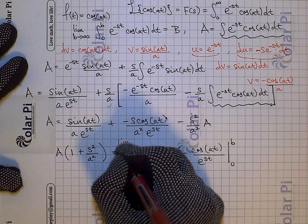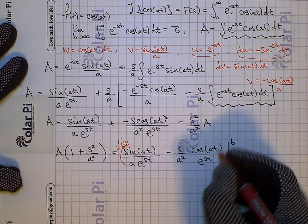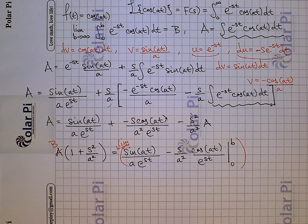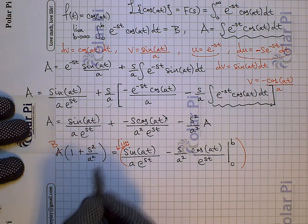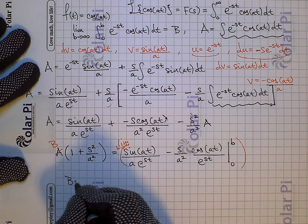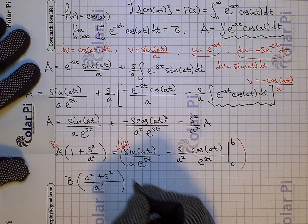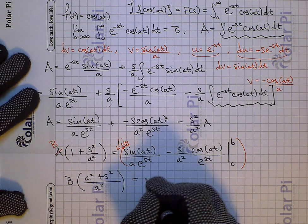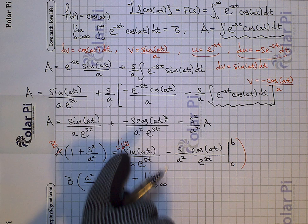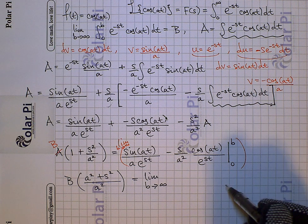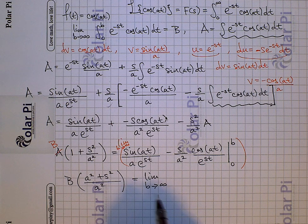Now I want to go from capital A to capital B. I need to evaluate this antiderivative at zero and B, and also write the limit as B goes to infinity in front of all of this. Taking care of common denominators, I can write in my next step that B times the quantity a squared plus s squared over a squared equals... and then there's a limit as B goes to infinity. I evaluate the expression at B and then at zero and take the difference.